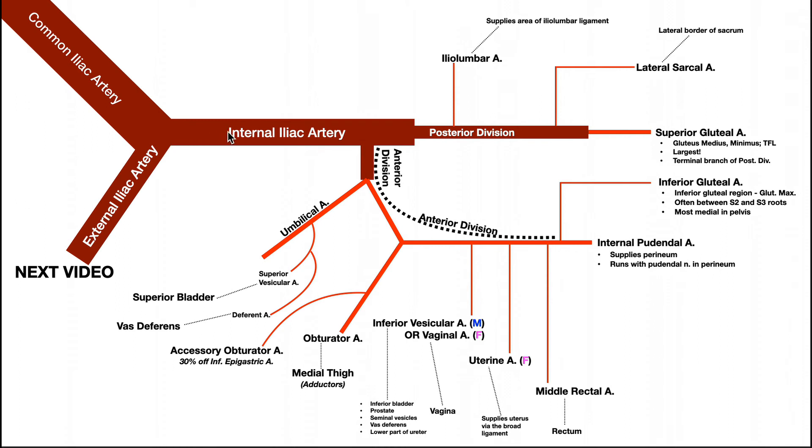This one, the internal iliac artery, stays within the pelvic region and it's going to give off a ton of branches to structures in the pelvis, with a few exceptions like the obturator artery which goes down into the thigh. But the internal iliac artery gives off two divisions. There's a posterior division and there's an anterior division.